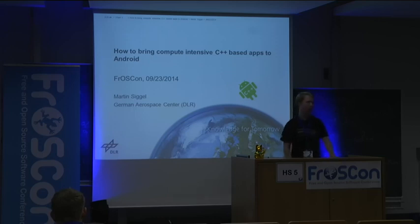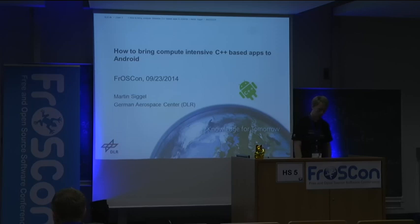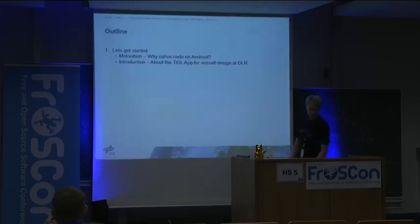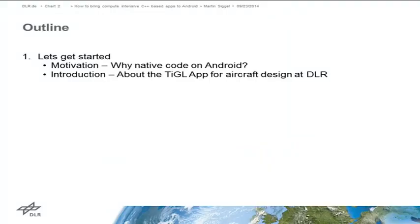Today I'm going to talk about how to bring compute-intensive C++-based applications to the Android platform. I'll briefly outline the talk. First, I'll try to motivate why this might be important — why you have to program native code for Android, since the standard programming language for Android is Java. As an introduction, I'll motivate that with the app Teagle, which we are developing at the German Aerospace Center and which we ported to the Android platform.